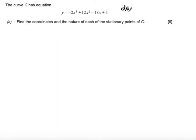So to find the stationary points of C we need to find where dy by dx is equal to 0. In order to do this I need to first differentiate y to get an equation for dy by dx.